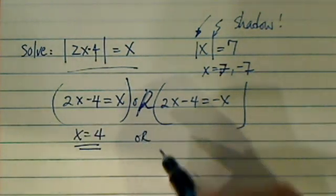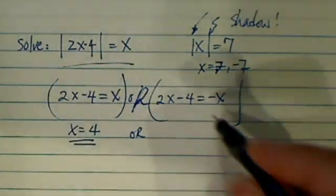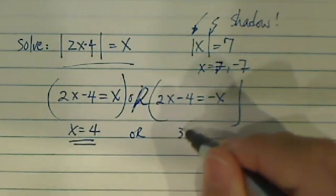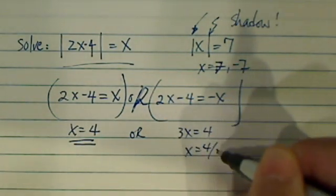Okay, so the biggest part and the most important part is set it up right. Okay, this one is you have 3x equal to 4 or x equal to 4 over 3.